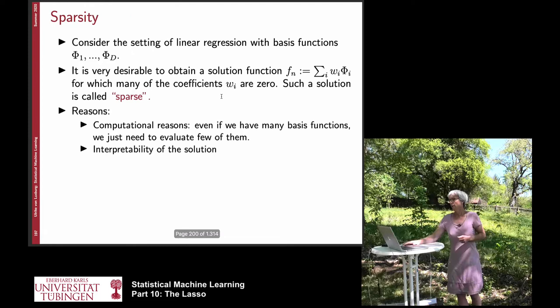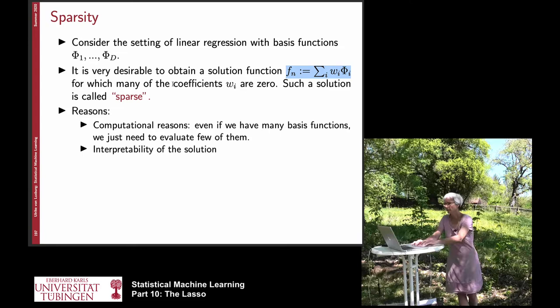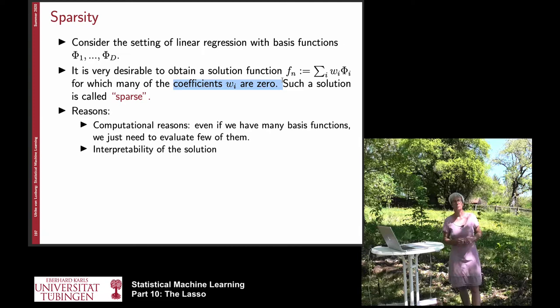So what we want to find is a function in the same form as before — a function that is a sum of Wi times phi — but what we want is that many of these coefficients Wi are zero. Such a solution is called sparse. Sparse always means a vector is sparse if most of its entries are zero. The vector W is supposed to be sparse, so most of its entries are supposed to be zero and only few of them are non-zero.